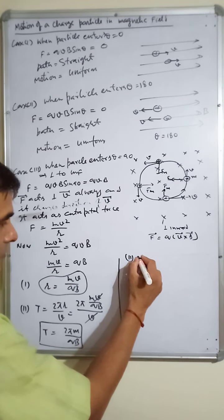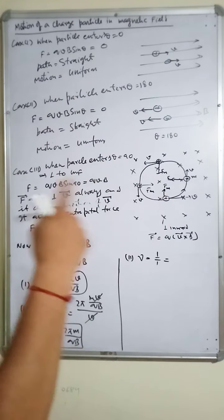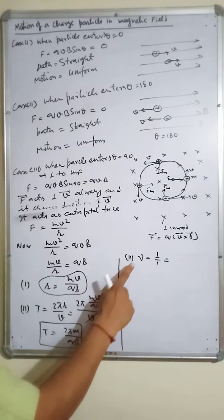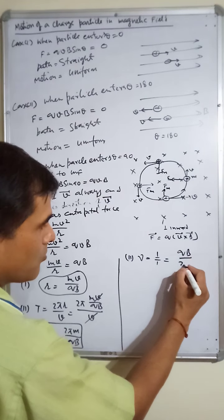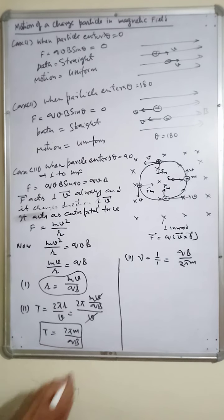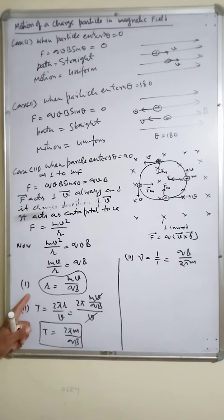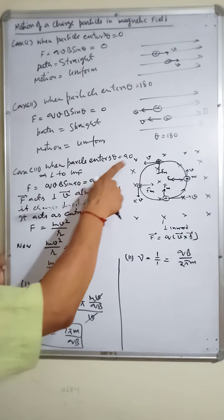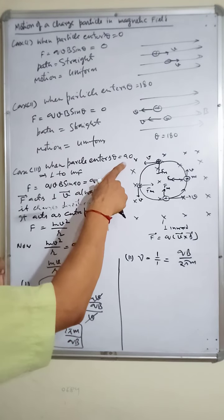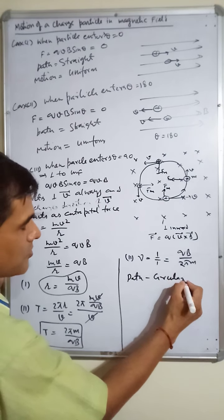The frequency is f = 1/T = qB/2πm — this is the number of circular turns completed per second. So when a charged particle enters the magnetic field at 90 degrees, its path will be circular. These are the key results: radius r = mv/qB, time period T = 2πm/qB, and frequency f = qB/2πm.